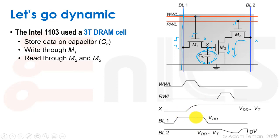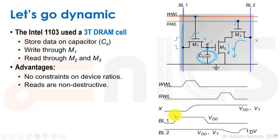This can be seen in the waveforms. The advantages are that there are no constraints on device ratio and we have a fully decoupled read. The write goes through M1, while M2 and M3 handle the read, completely decoupled from each other. We can make M2 and M3 as large as we want without impeding the write, and M1 as large as we want without impeding the read. Reads are also non-destructive, so we can read from the cell as many times as we want without destroying the data.